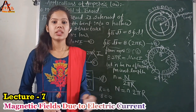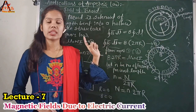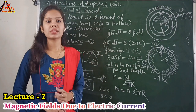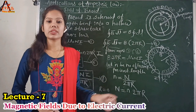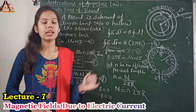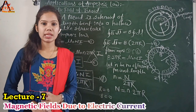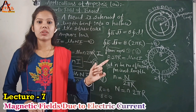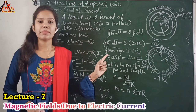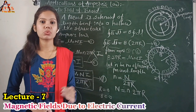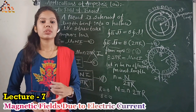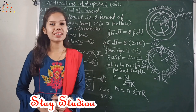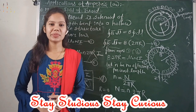So we have seen Ampere's law and its two applications — one for a solenoid and one for a toroid. Either of these two applications can be asked in the exam, so prepare it nicely. We have also covered Biot-Savart law and its three applications, and Ampere's law and its two applications. In the next lecture we will move to the next point. Until then, stay studious, stay curious. Thank you.